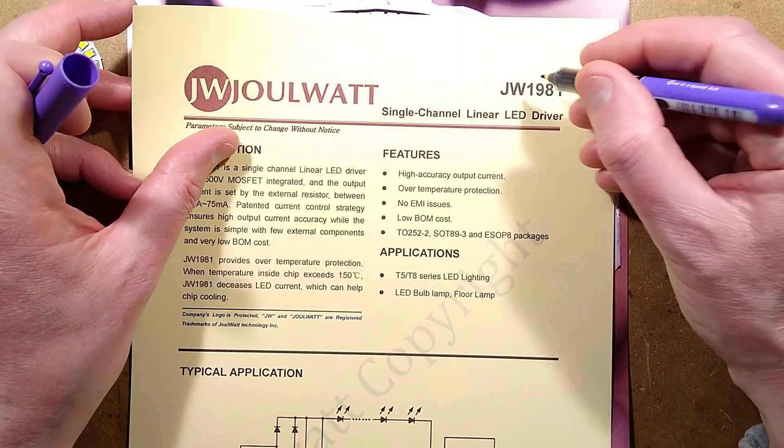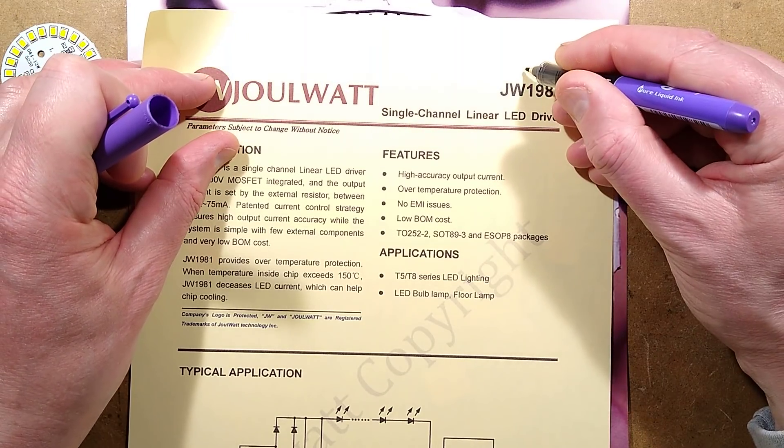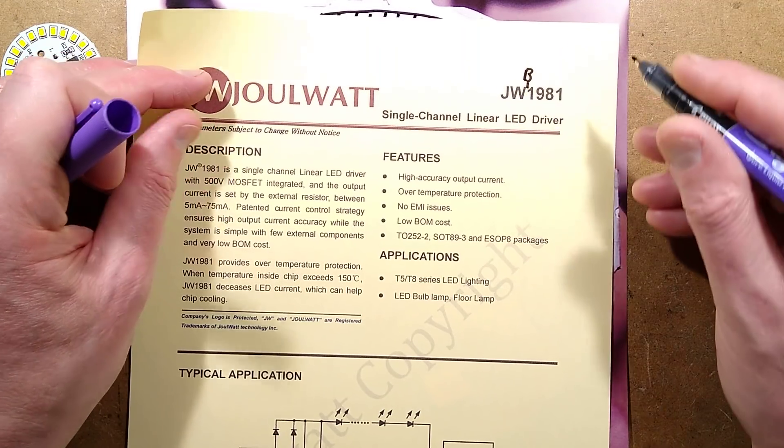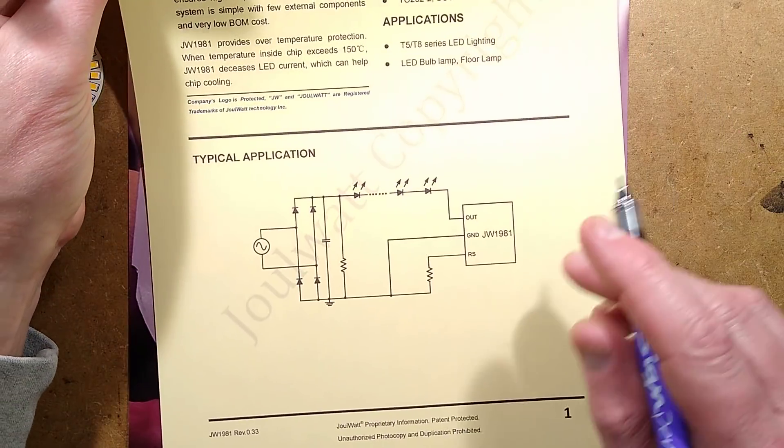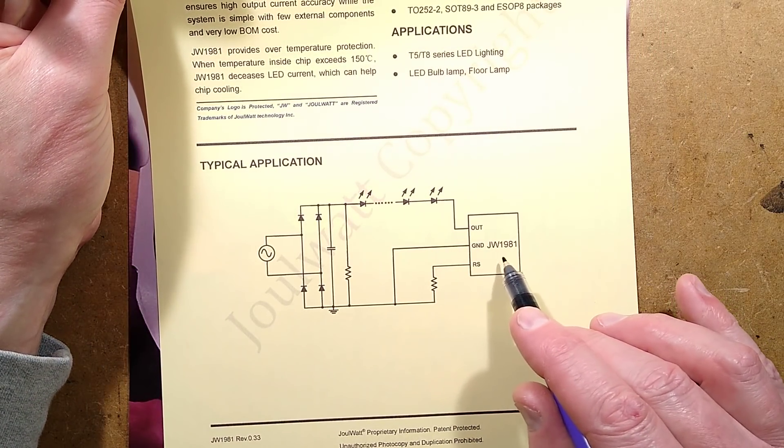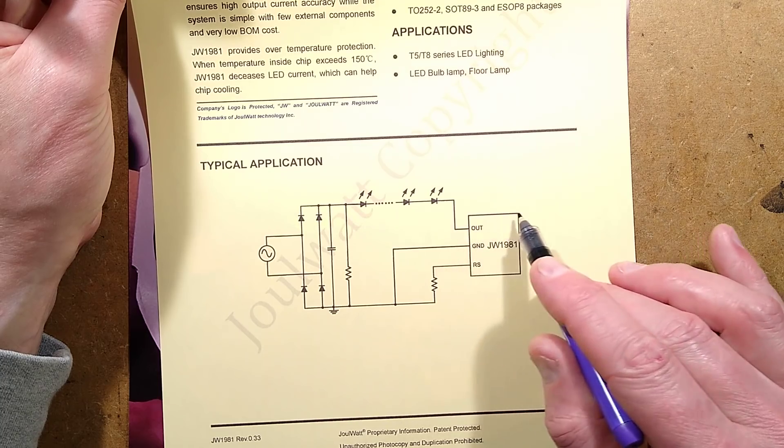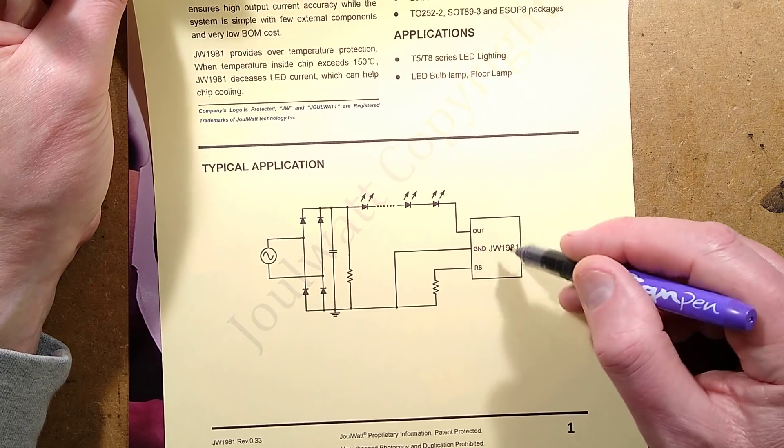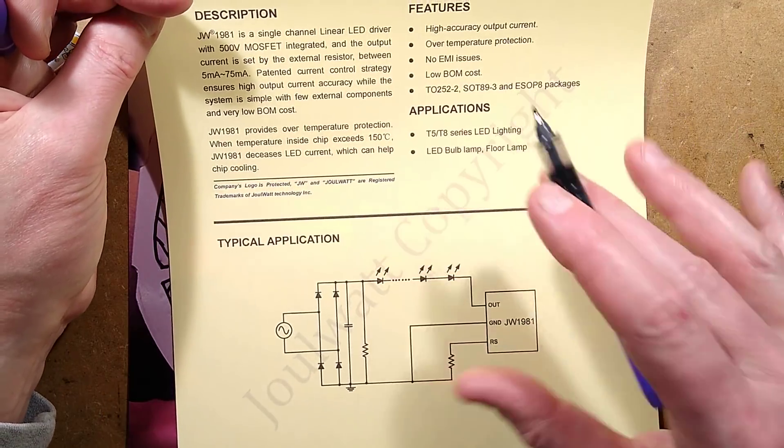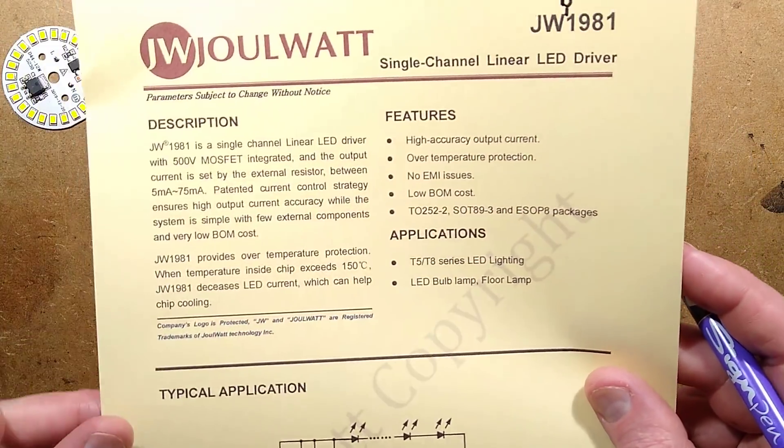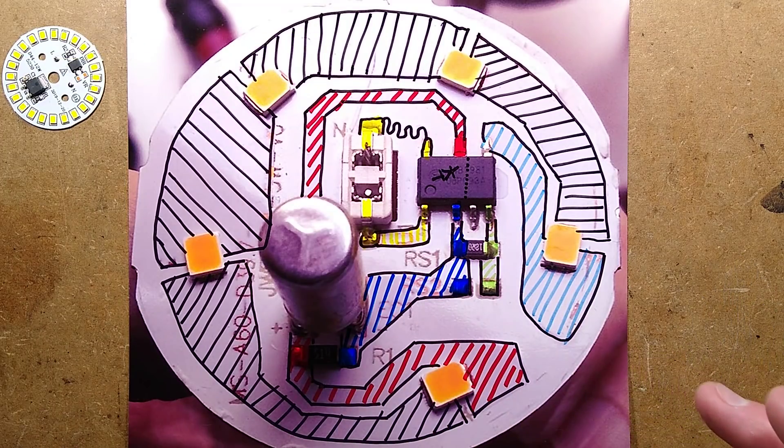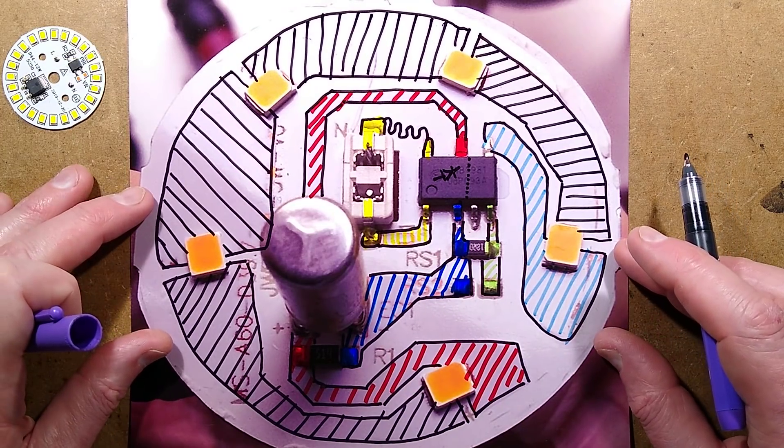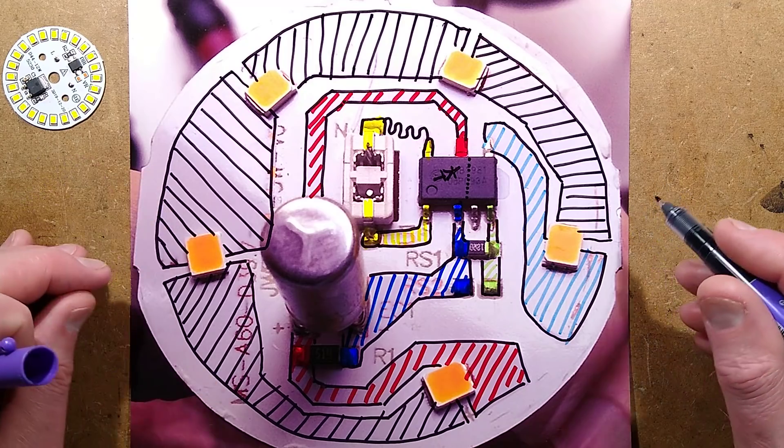It's basically JW1981, but they've got a B added in here to suggest the bridge rectifier, because as it stands, the JW1981 is just purely a linear current regulator. But they've added the bridge rectifier into that, but there is no data sheet available for it. It's just one of these things that it's not really aimed at people like us. It's aimed at the lamp manufacturers.